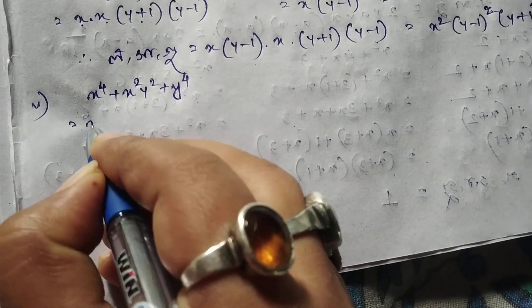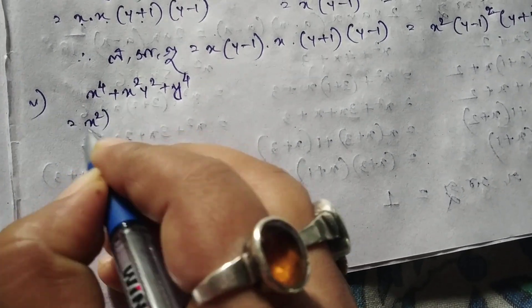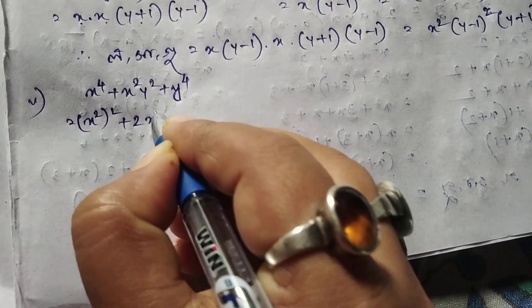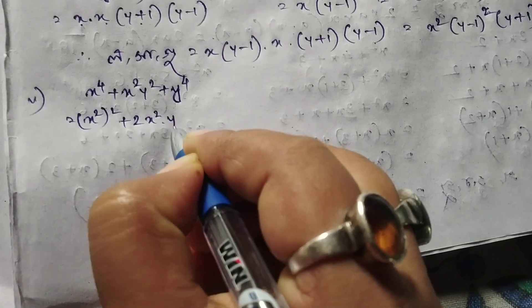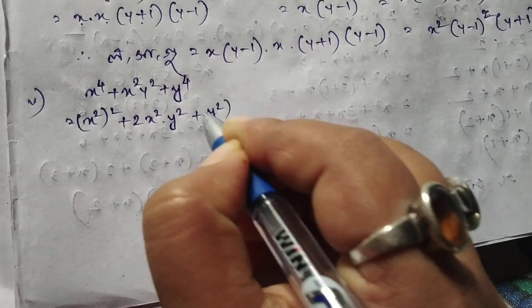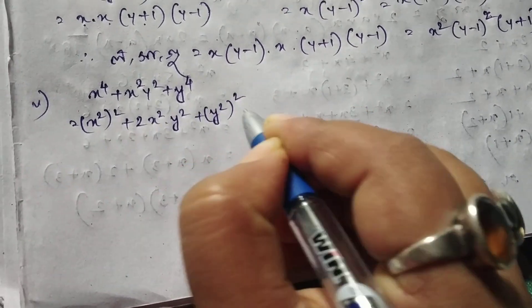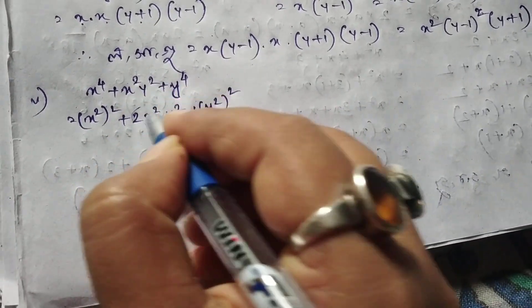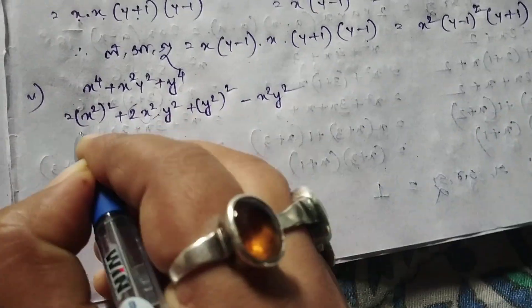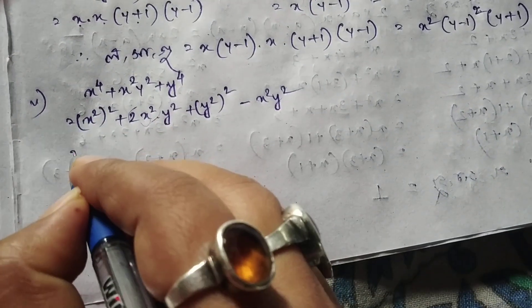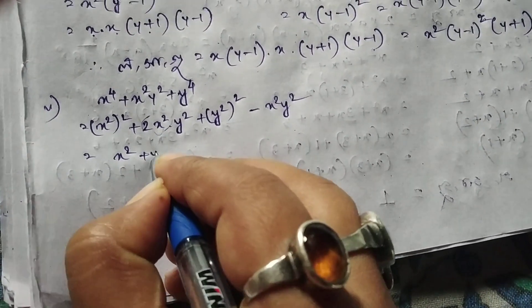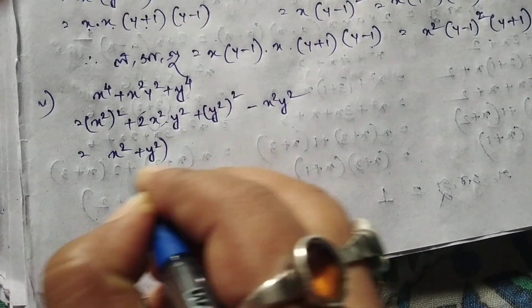This is x squared, whole square. This is 2. x squared y squared plus y squared, whole square. The other side is minus x squared y squared. 18 times x squared plus y squared, whole square.